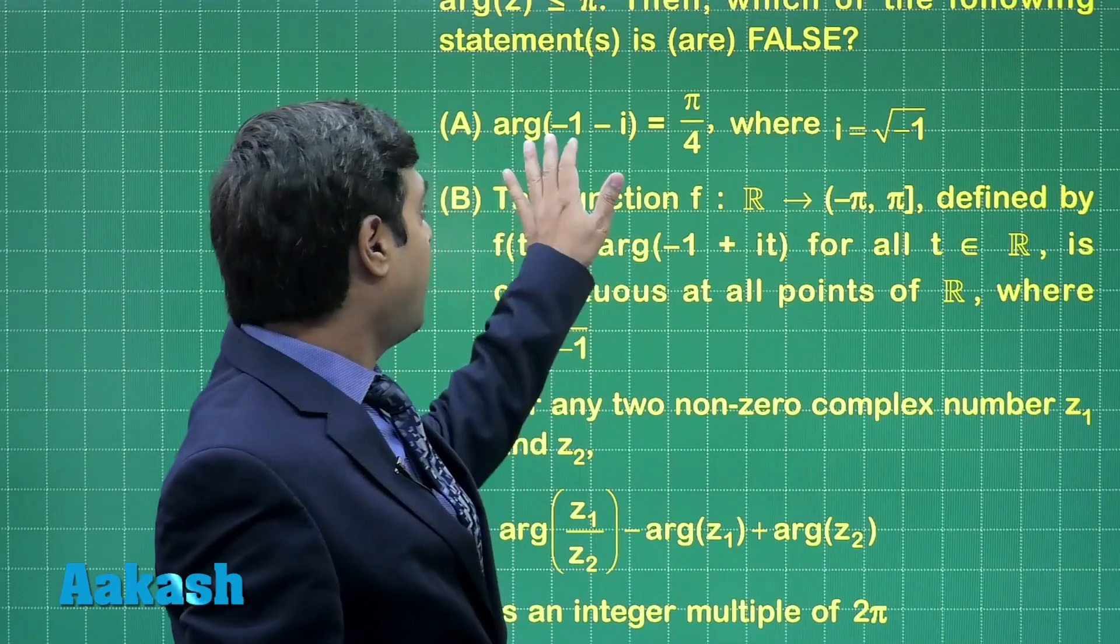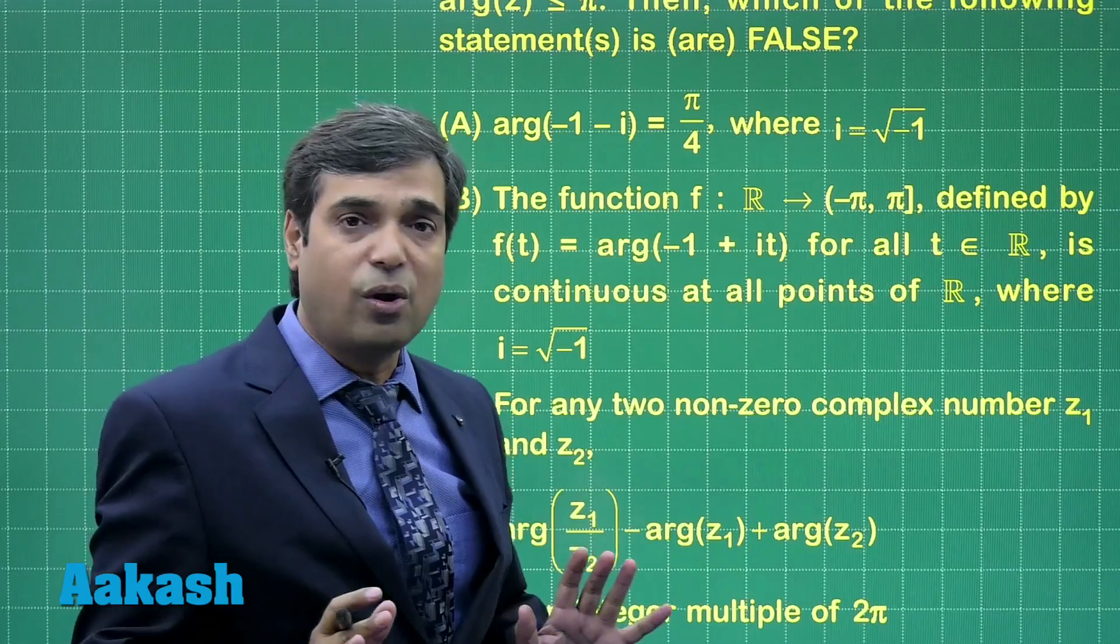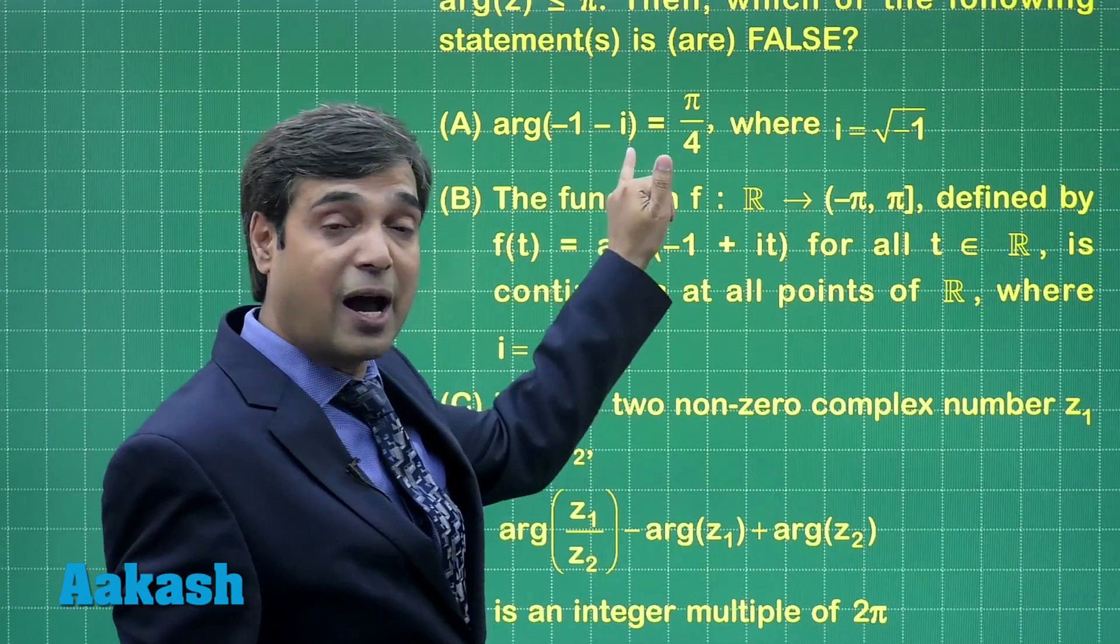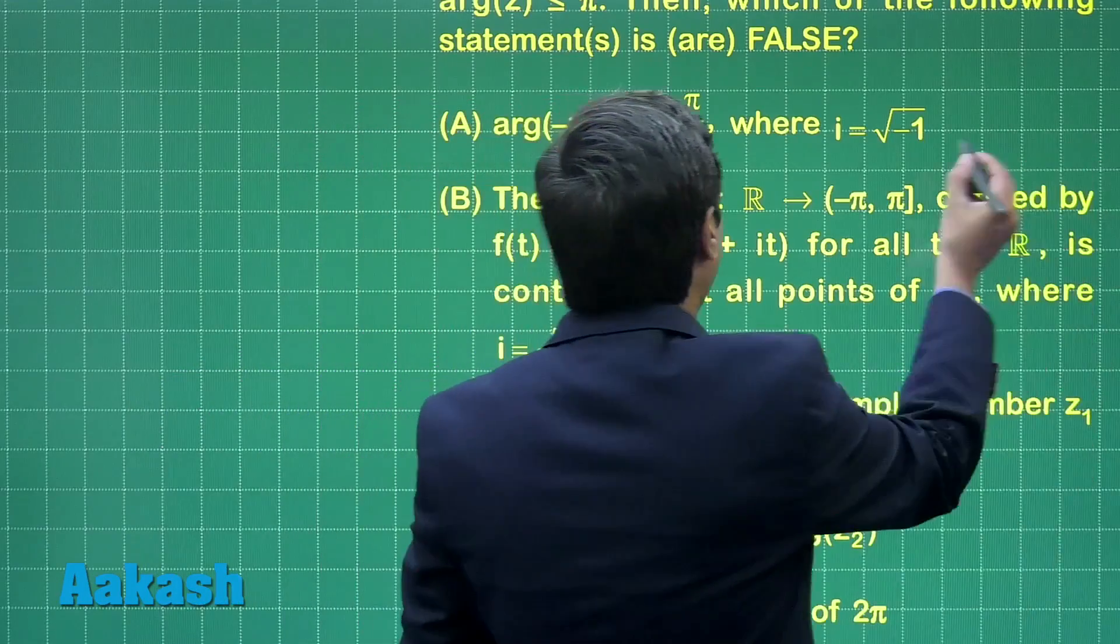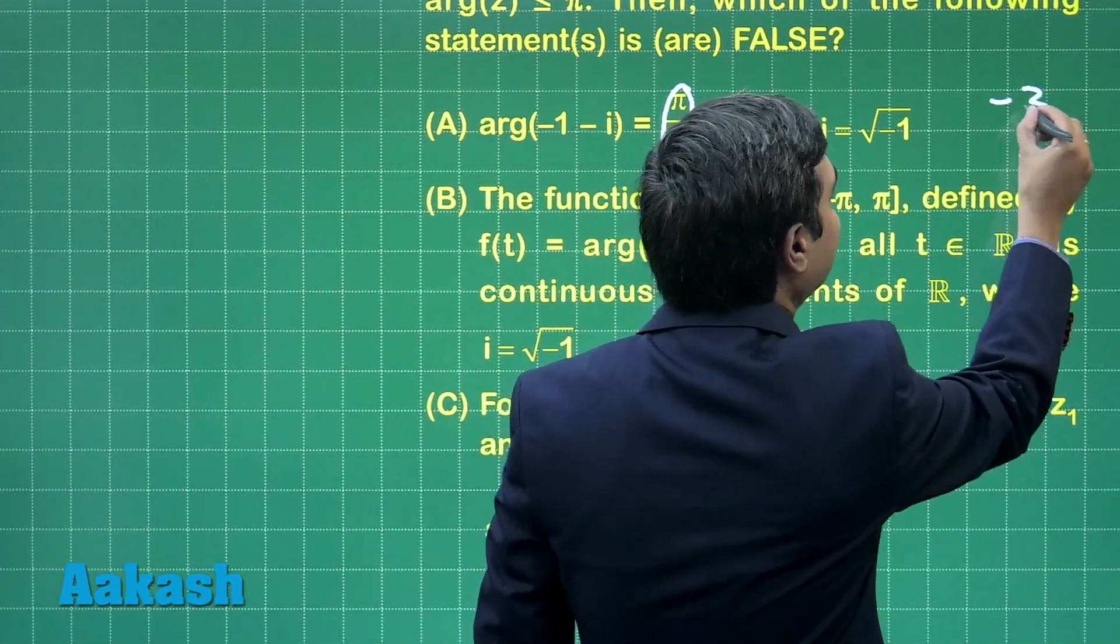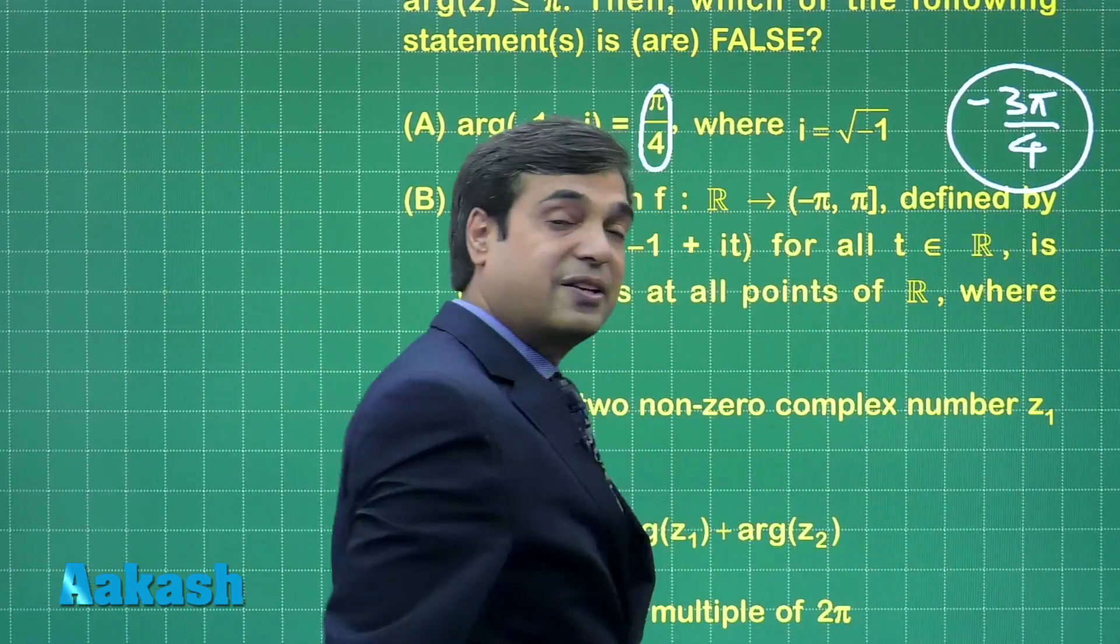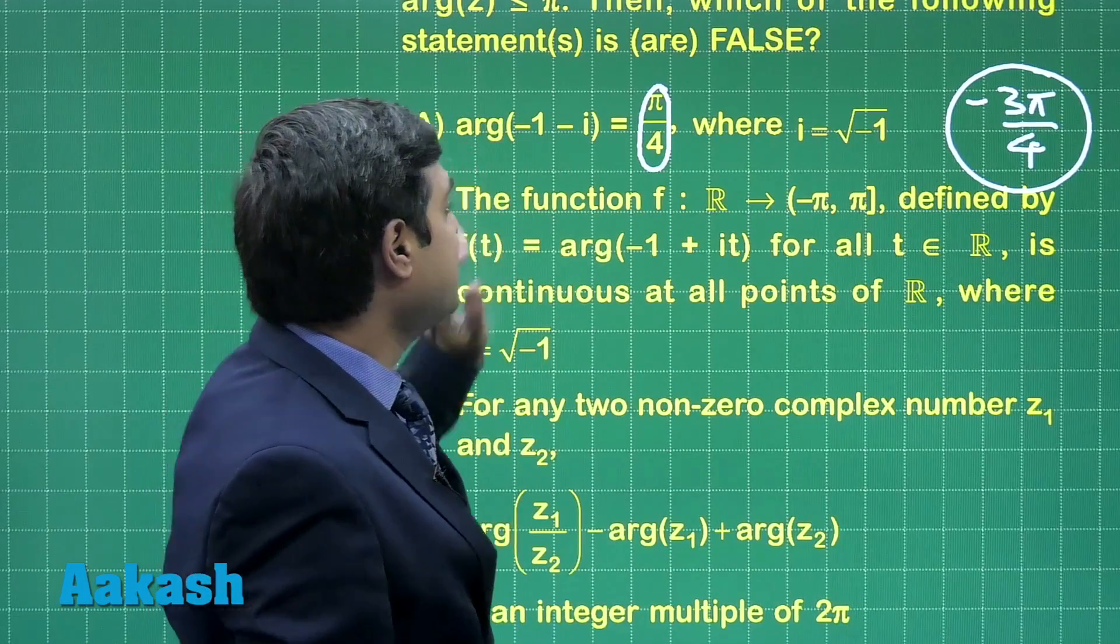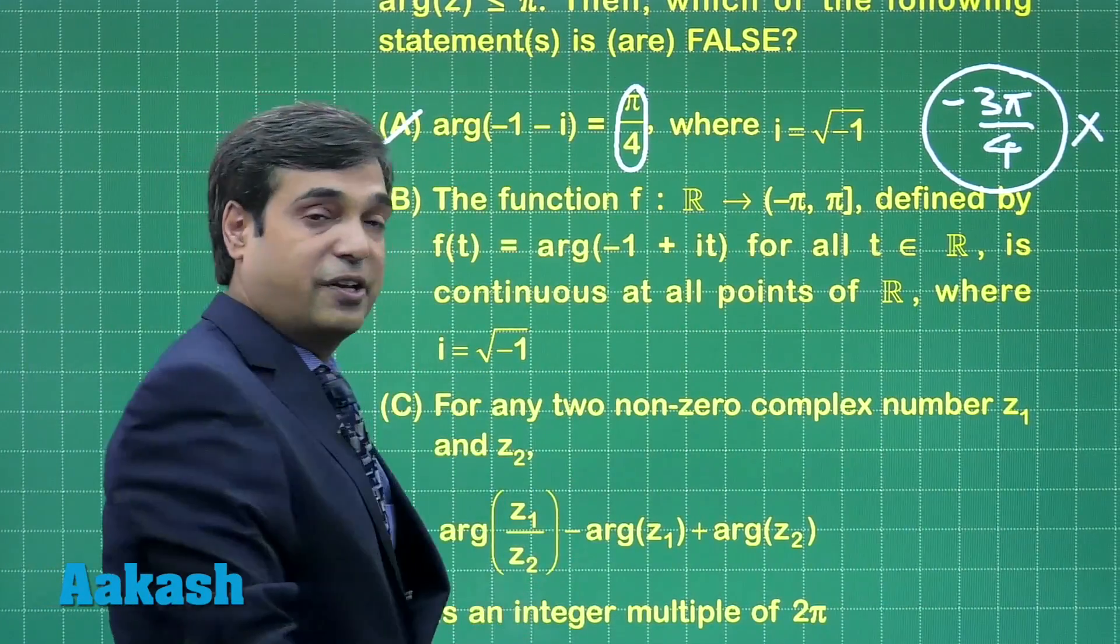Argument of the number minus 1 minus iota is equal to pi by 4. Clearly this is wrong because minus 1 minus iota lies in the third quadrant. In the third quadrant, this argument will actually be minus 3 pi by 4. This is clear. This statement is false, meaning this is one of our options.